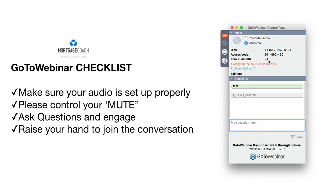The most important thing: you can't do both. You can't be on your phone and have it clicked on computer, or you will completely blow up the call. Going through this checklist — make sure you set up your audio properly, please control mute. If this is interactive, we want you to be able to turn it on and off, ask questions, and engage in the conversation. Raise your hand and we'll call on you and bring you in. Hopefully this was helpful. Thank you very much.